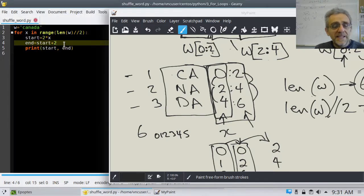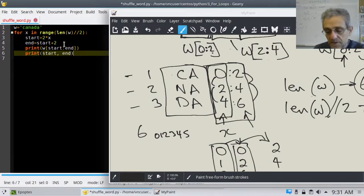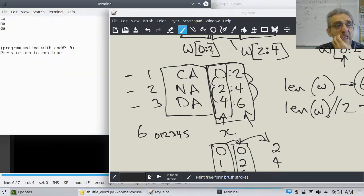But now, at least I have some variables which are representative of the integers I'm generating. So, at this point, let's take these start and end integers and generate the slice. So, I'll say w, start, end, and let's print it. Let's print that slice. So, now I'm going to get rid of the numbers. Now, I'm going to convert it to strings. Let's run it, and I'm getting ca, na, da. Perfect. That's exactly what I wanted.